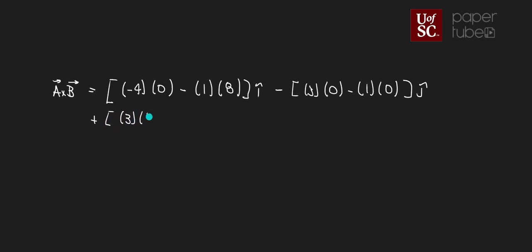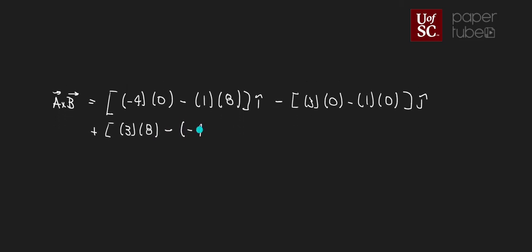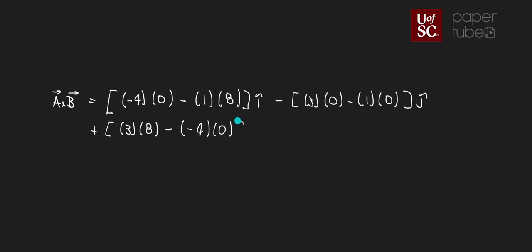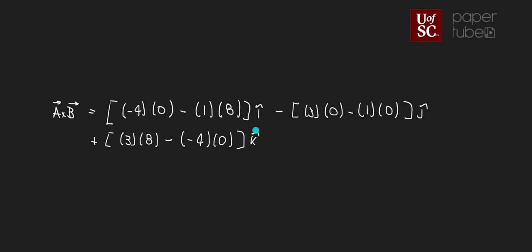So this A cross B is going to be equal to minus 4 times 0 minus 1 times 8 i, minus 3 times 0 minus 1 times 0 j, plus 3 times 8 minus minus 4 times 0.